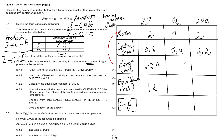For PQ, the ratios are 2 to 2, so the change is also 0.4, but this time we subtract because we're using up the product. So PQ gets minus 0.4. At equilibrium: P = 0.8 + 0.4 = 1.2; Q₂ = 0.8 + 0.2 = 1.0; PQ = 3.2 − 0.4 = 2.8.